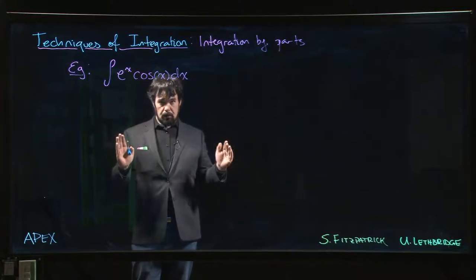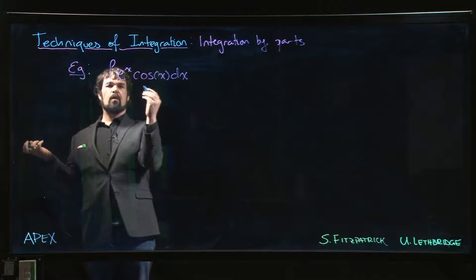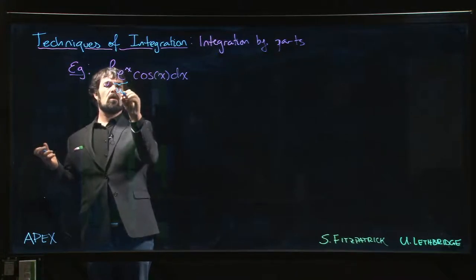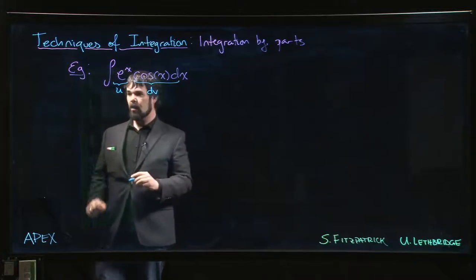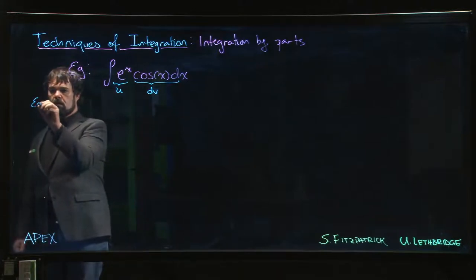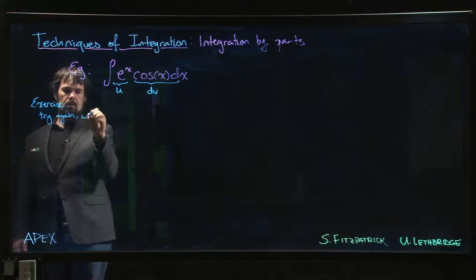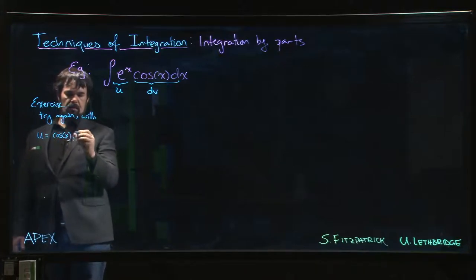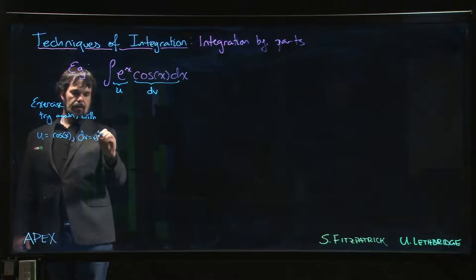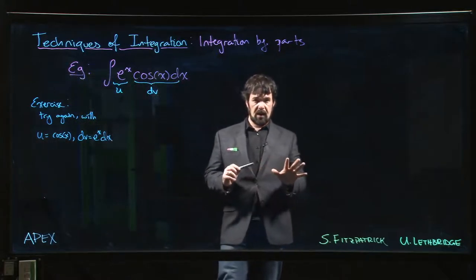Turns out you can go either way. We'll do it one way. You could try the other way if you want. But since we've got it sitting the way it is, let's call this u and let's call this dv. And so something you might try just as an exercise is to redo this. So try again, but take u to be cos and dv to be e to the x dx. Your solution will look a little bit different, but you should get there in the end.